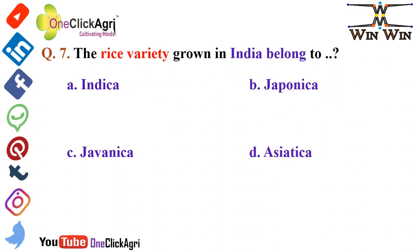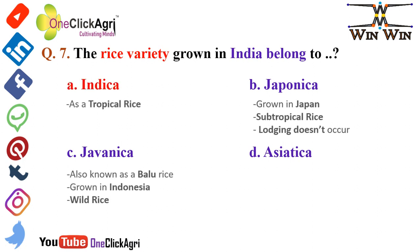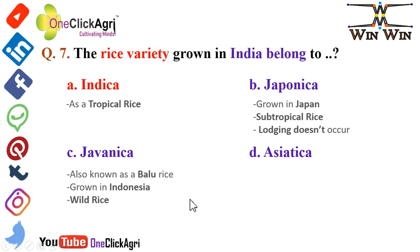The rice variety grown in India belongs to Indica, also known as tropical rice. The other options: Japonica is widely grown in Japan and is also known as subtropical rice; in Japonica, lodging doesn't occur — please remember this point. Javanica is also known as Bulu or Bulu rice, grown in Indonesia, and is also known as wild rice — please remember this.